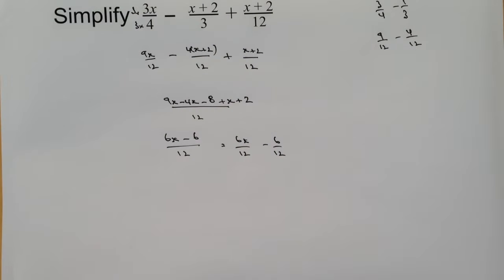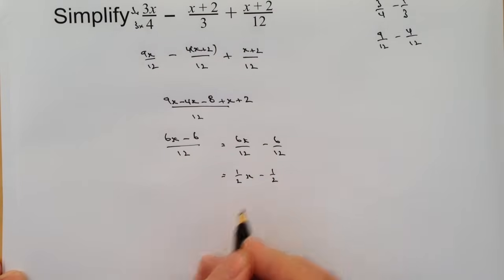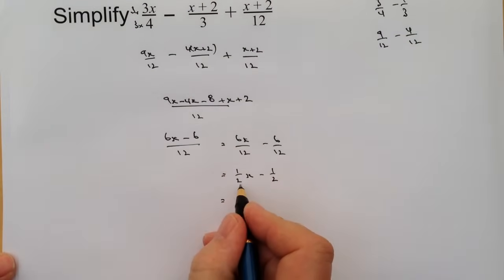So that would become a half x minus a half. One of the ways you can write that that would be a bit simpler is if you combine the two twos together, you get x minus 1 over 2.